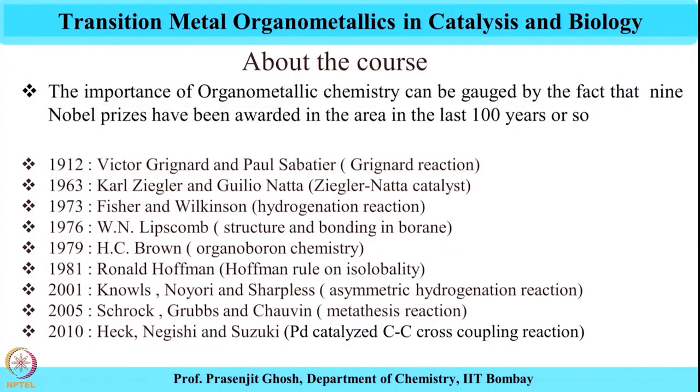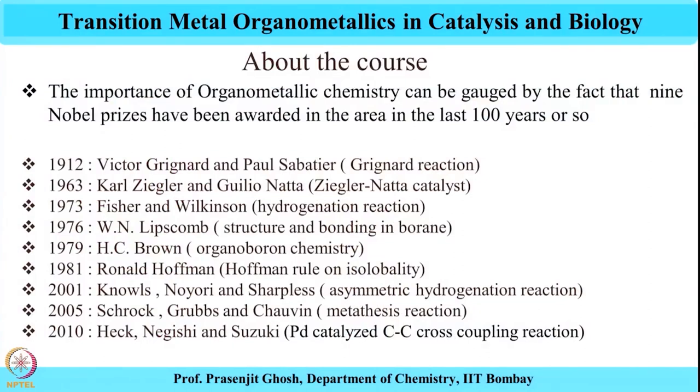Then in 2001, Knowles, Noyori, and Sharpless received the Nobel Prize for asymmetric hydrogenation. Again, this is a second Nobel Prize on a similar discovery — the first being awarded to Fischer and Wilkinson on hydrogenation in 1973, and in 2001 Knowles, Noyori, and Sharpless receiving the second Nobel Prize for asymmetric hydrogenation using more refined techniques, after another 30 years. In 2005, metathesis was recognized and the Nobel Prize was given to Professor Richard Schrock, Robert Grubbs, and Professor Chauvin.